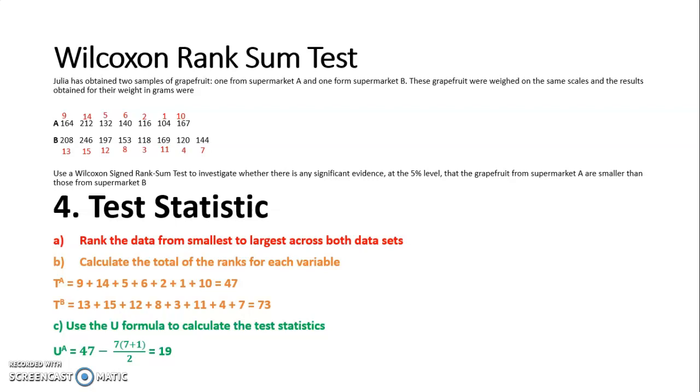And then I am going to do the same for Supermarket B, using that number 73 for the total. And this time there are 8 values or 8 grapefruits from Supermarket B, which is why I have got 8 bracket 8 plus 1 over 2 in the fraction. So I have two test statistics and I am going to use the one that is the smallest value, which is 19.